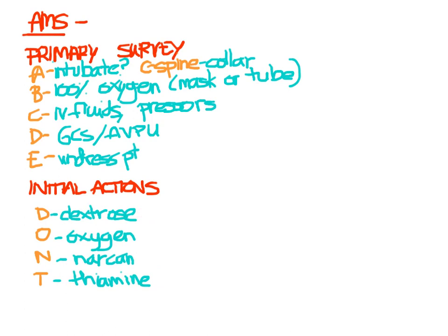You don't have to give all of these things to everybody, but you have to at least consider them. For dextrose, get an accu-check and make sure their sugar is good. Check a pulse ox or put them on 100% oxygen. For Narcan, look at their pupils — do you think this is an opioid overdose? And thiamine: if this is alcohol-related, you might want to give some thiamine.